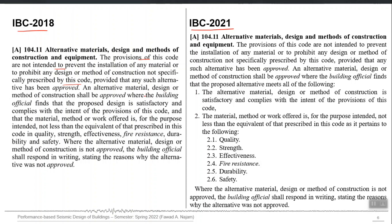An alternate material, design, or method of construction shall be approved where the building official finds that the proposed design is satisfactory and complies with the intent of the provisions of this code. There is a term called 'building official' — we need to define it in our local context as to who will actually approve that alternate design. Building official is a term which should be specified in our local context.